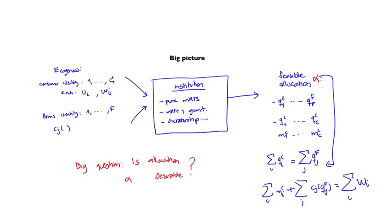For example, are the allocations generated by a market with a certain set of government policies desirable or not? So we need to be able to determine whether the allocation is desirable in a more general context than only a pure market.